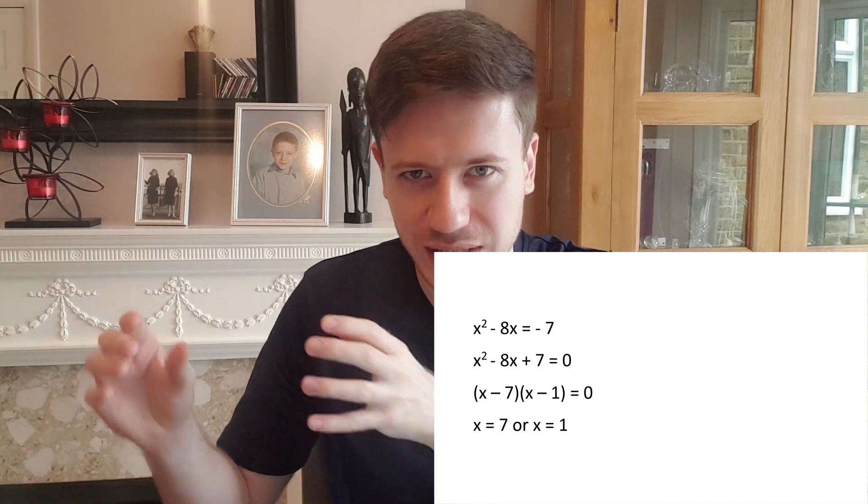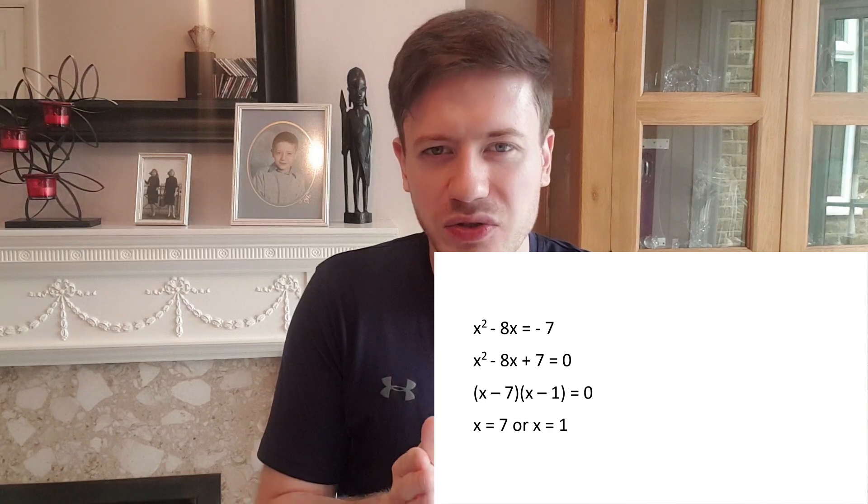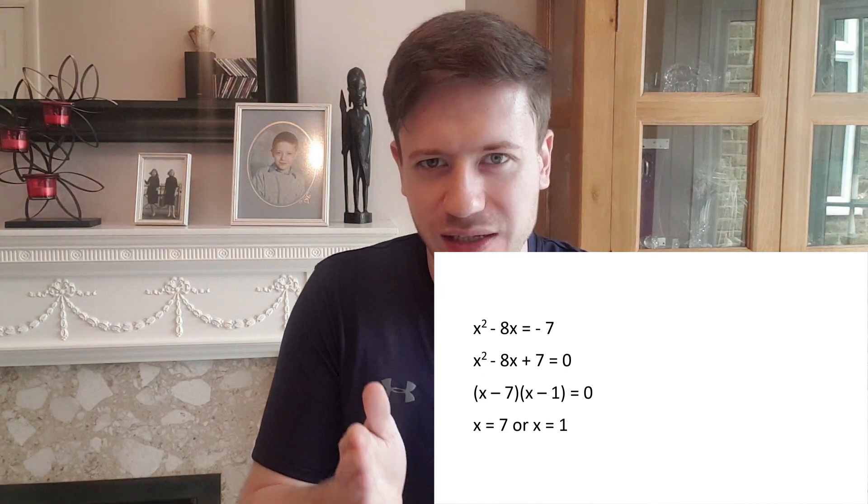and the solutions become x equals 7 and x equals 1. If quantity A which is x is always 1 or 7 then quantity B which is 7.2 by definition has to be bigger than either of those. So the answer would be B.